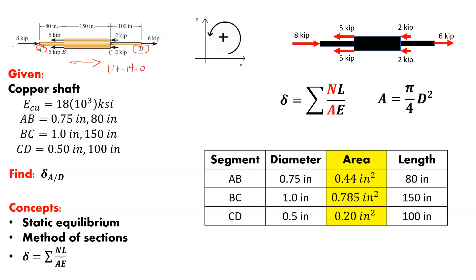Since it's a round bar, the cross-sectional area at each section is pi over 4 times the diameter squared. I went ahead and put this into a table with segments AB, BC, and CD, showing their crucial information — the given lengths, given diameters, and cross-sectional areas for each segment. You can work this out on your own; I didn't want to spend a lot of time on that equation since it's just calculating the area of a circle.